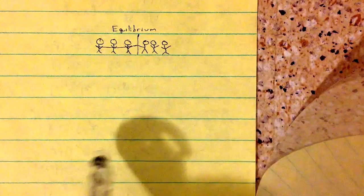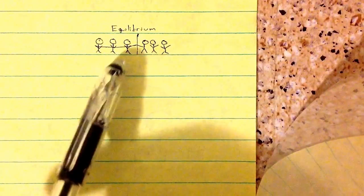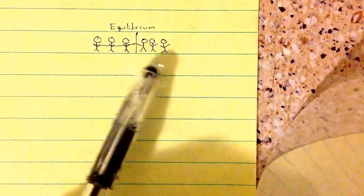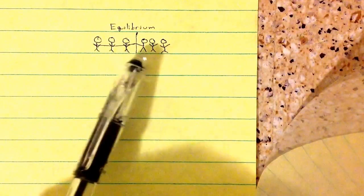This is how I think about equilibrium. Let's say we have equilibrium as a wall. There's three people on one side and three people on the other. Right now it's in equilibrium. They're all pushing with the same force.